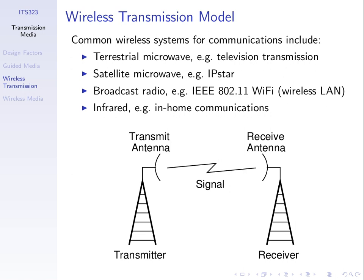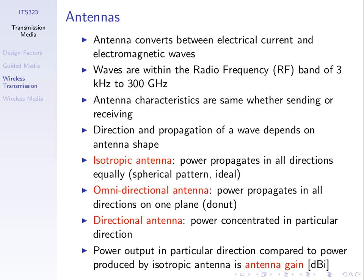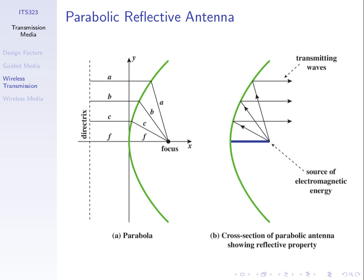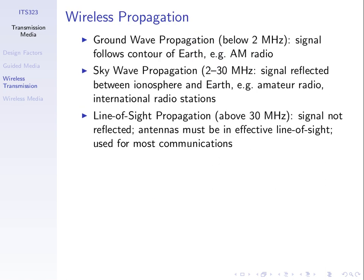We'll return to antennas towards the end of this topic. Let's look at how signals propagate in a wireless environment. The way that signals propagate depends upon the frequency. There are three different classifications: ground wave propagation for frequencies less than 2 MHz, sky wave propagation between 2 and 30 MHz, and line of sight propagation for greater than 30 MHz.